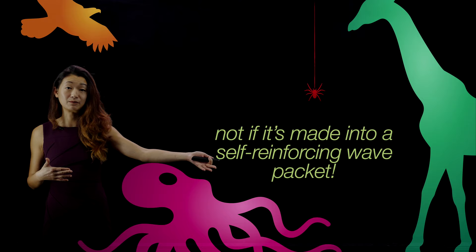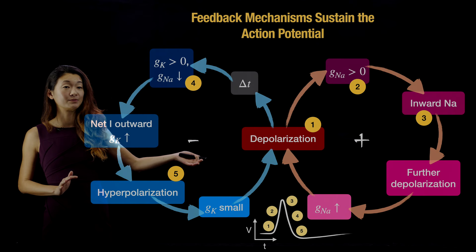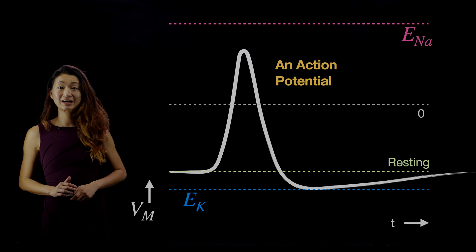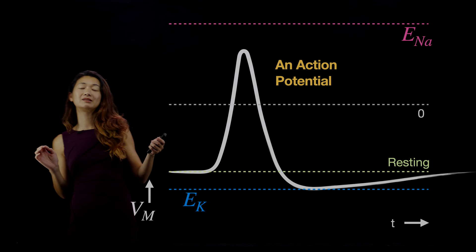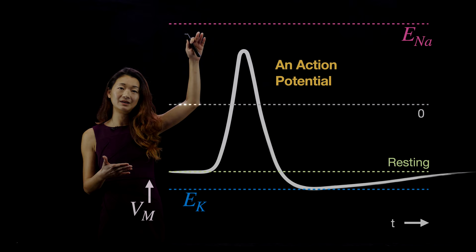In summary, we're going to unpack this diagram by looking at the feedback mechanisms that sustain the action potential, both in terms of positive feedback and negative feedback. This is an action potential — the iconic picture everyone thinks about. It has a very characteristic shape: starting from rest, it goes up, comes back down, overshoots a little bit, and then over a slightly longer time frame goes back to resting.